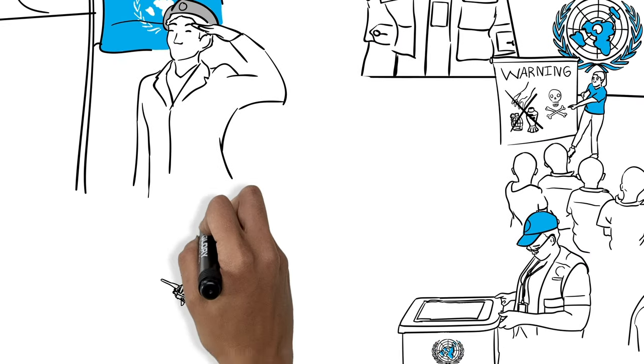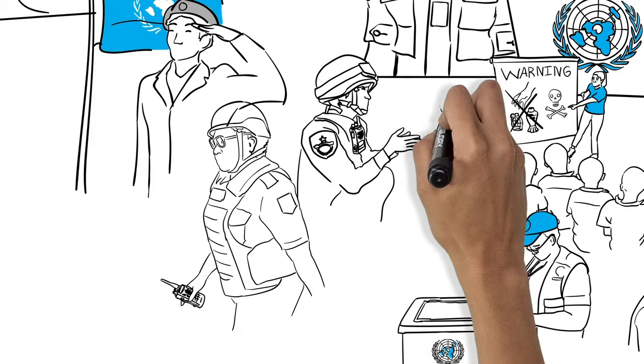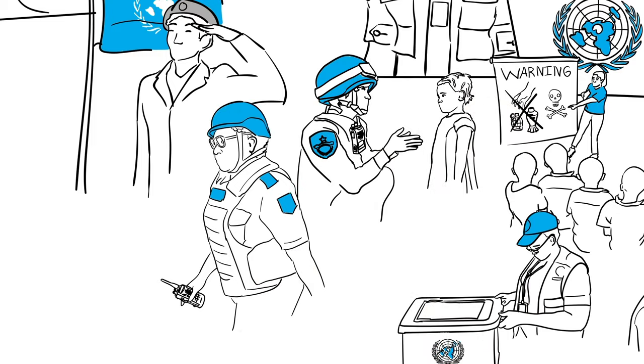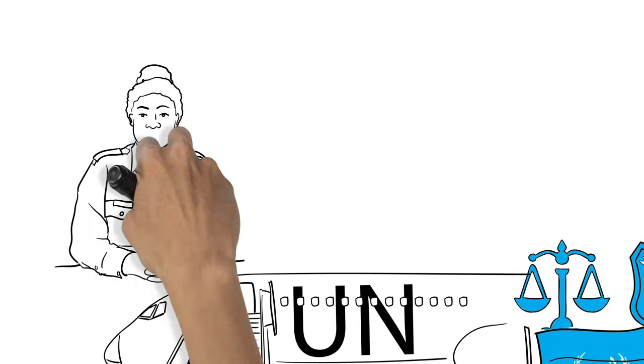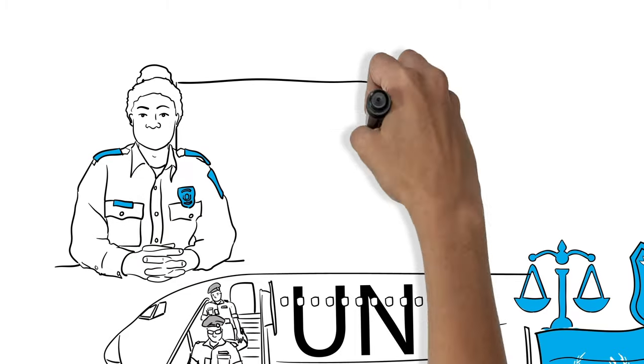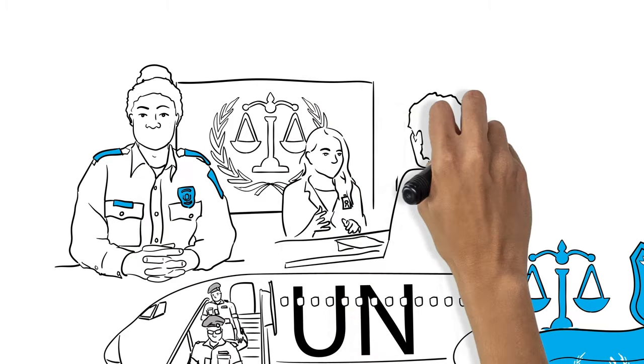You may serve in an individual position or as part of a military contingent or formed police unit. To join UN justice and corrections personnel, you will typically be nominated by your government for service with UN peace operations. But you can also serve as civilian personnel.